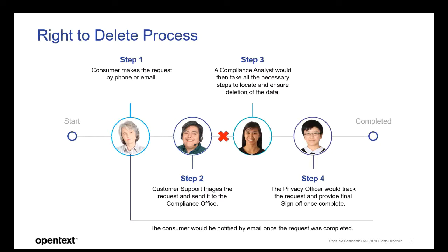The privacy officer was using a spreadsheet to track the requests and was becoming concerned that it was no longer accurate and wasn't providing sufficient information. Finally, in some cases, the notification back to the consumer was either delayed or not sent at all.